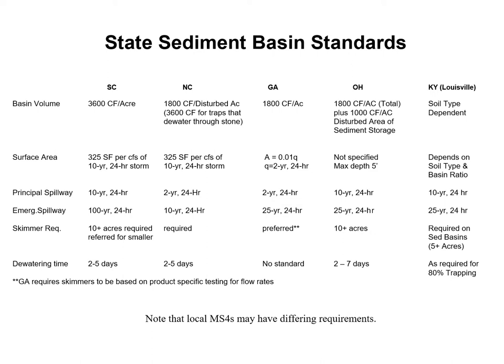The principal spillway — generally the skimmer and riser — typically handles a 10-year or two-year storm depending on the state. Most states also require an emergency spillway to handle rain events exceeding what the principal spillway can handle, ranging from a 10-year to a 100-year event.